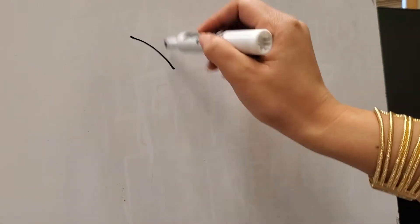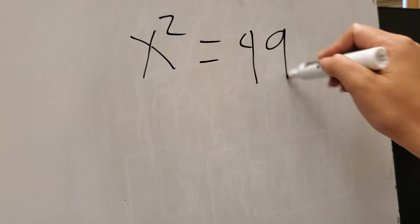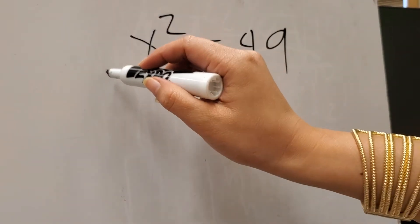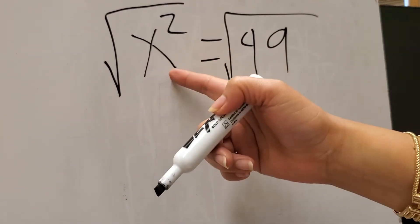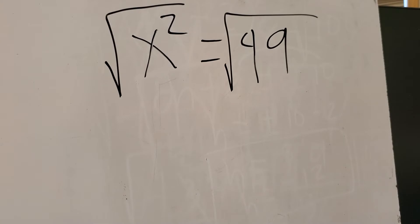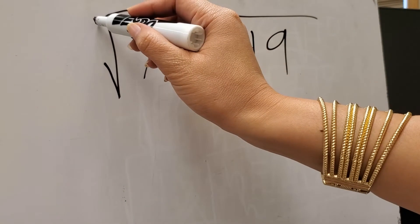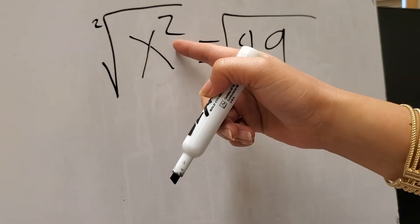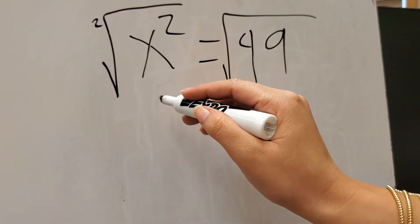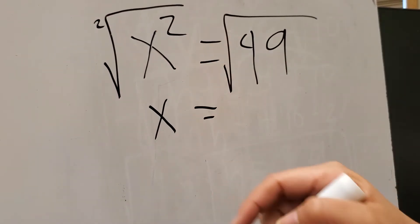So for example, if you have x squared is equal to 49, all you have to do is get the square root of both sides. Since we are looking for x, we have to get rid of the exponent 2. The index of the square root is 2, so all you have to do is divide 2 by 2 and that gives you 1. So the square root of x squared is equal to x.